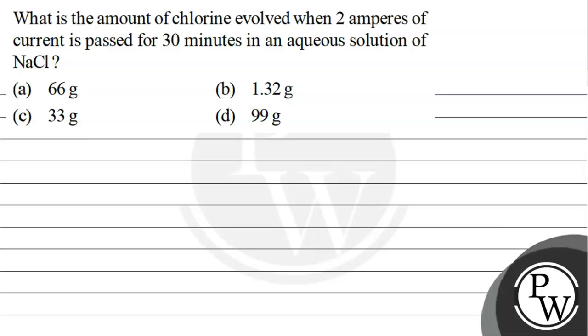Hello bacho, let's read this question. What is the amount of chlorine evolved when 2 amperes of current is passed for 30 minutes in an aqueous solution of NaCl? Option A: 66 gram, option B: 1.32 gram, option C: 33 gram, or option D: 99 gram. The key concept for this question is Faraday's first law.